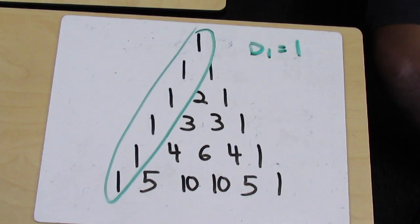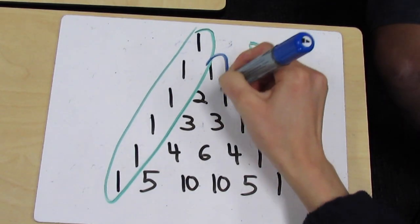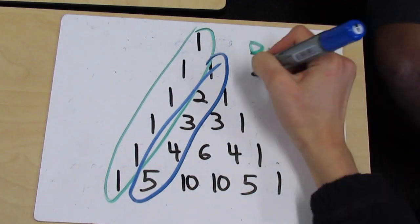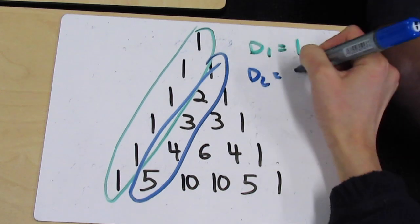There are many patterns in Pascal's Triangle. The first diagonal, as you can see, is all just ones. The second diagonal, as you can see, are counting numbers, so they go 1, 2, 3, 4, 5, and so on.